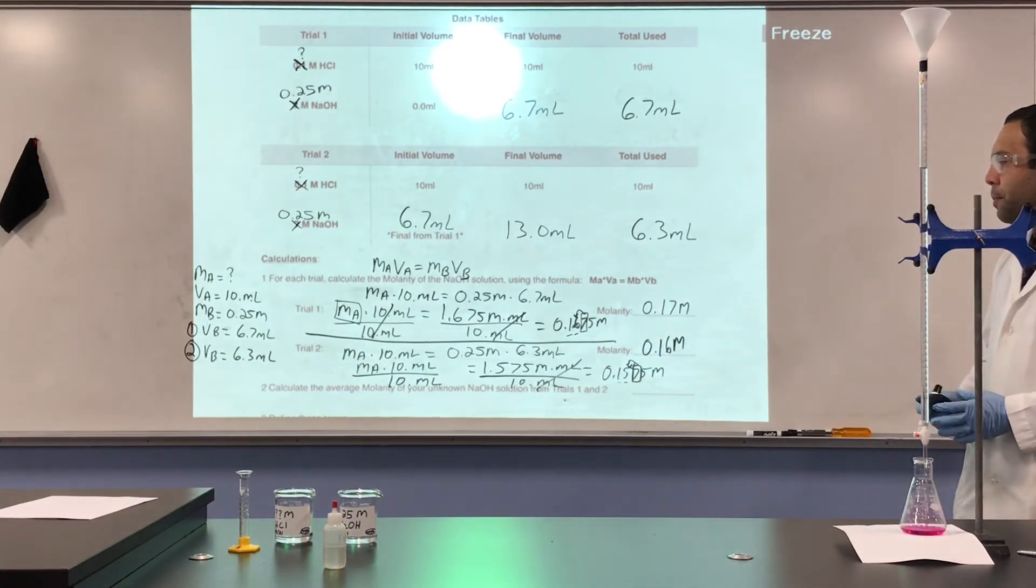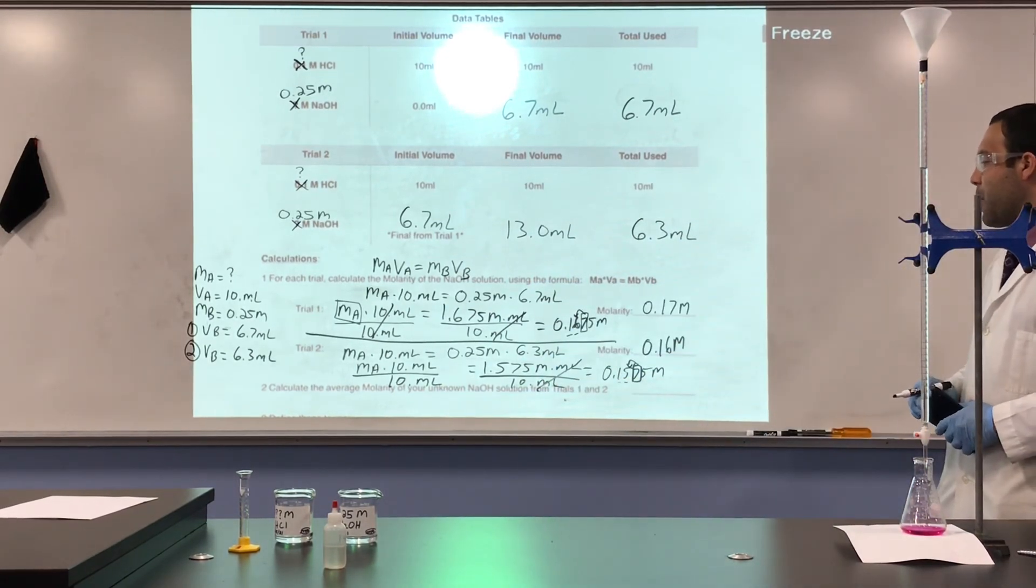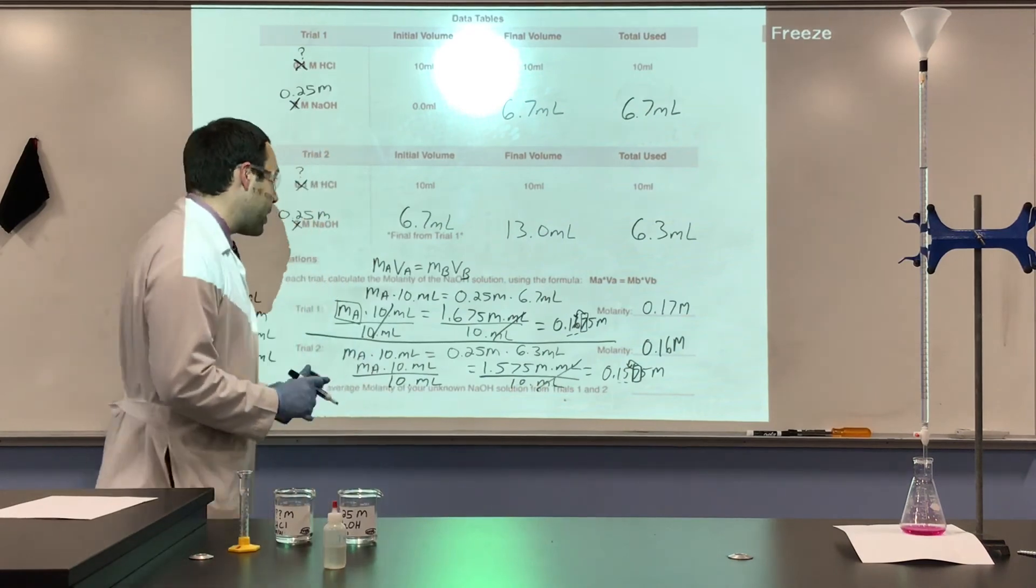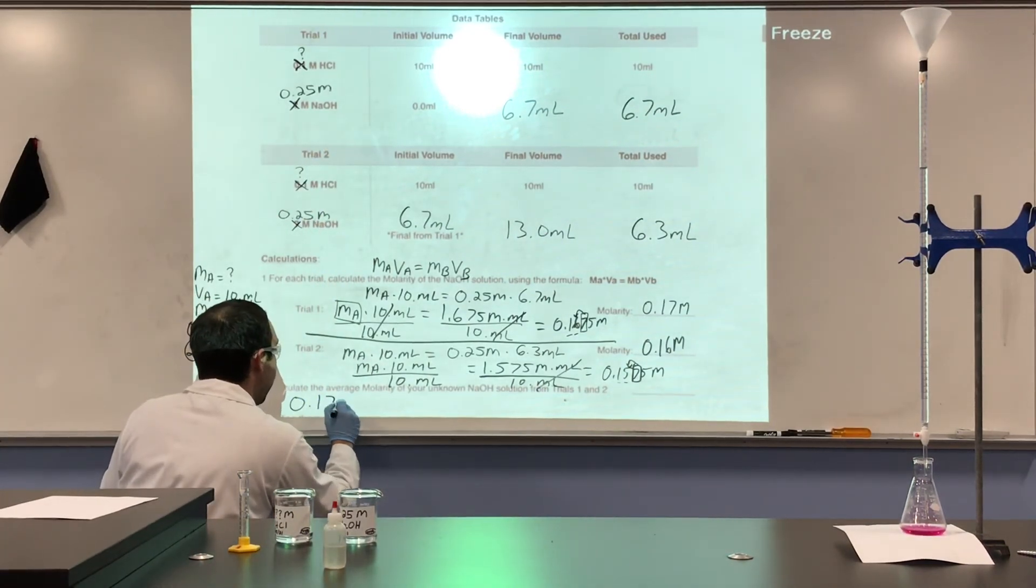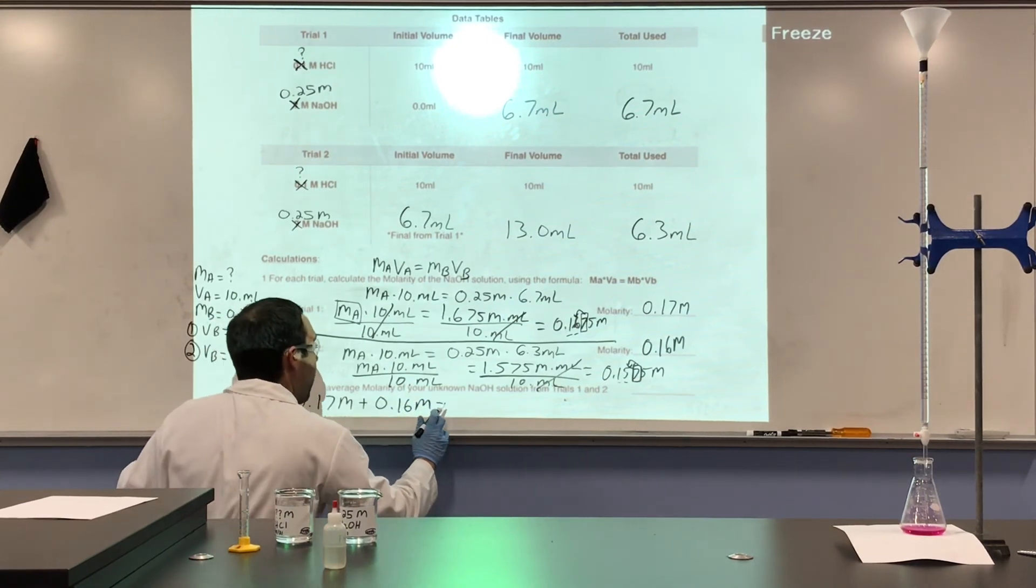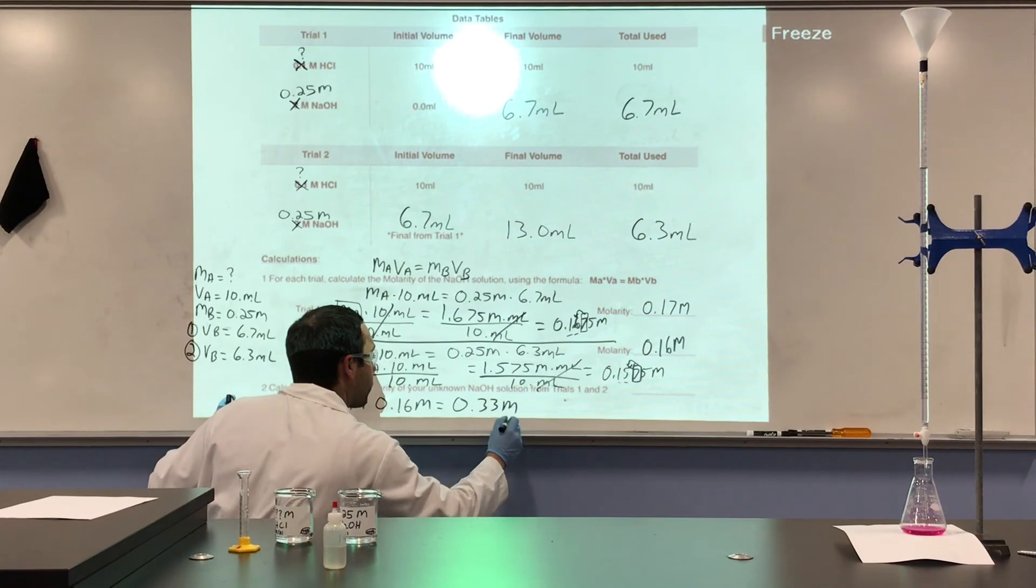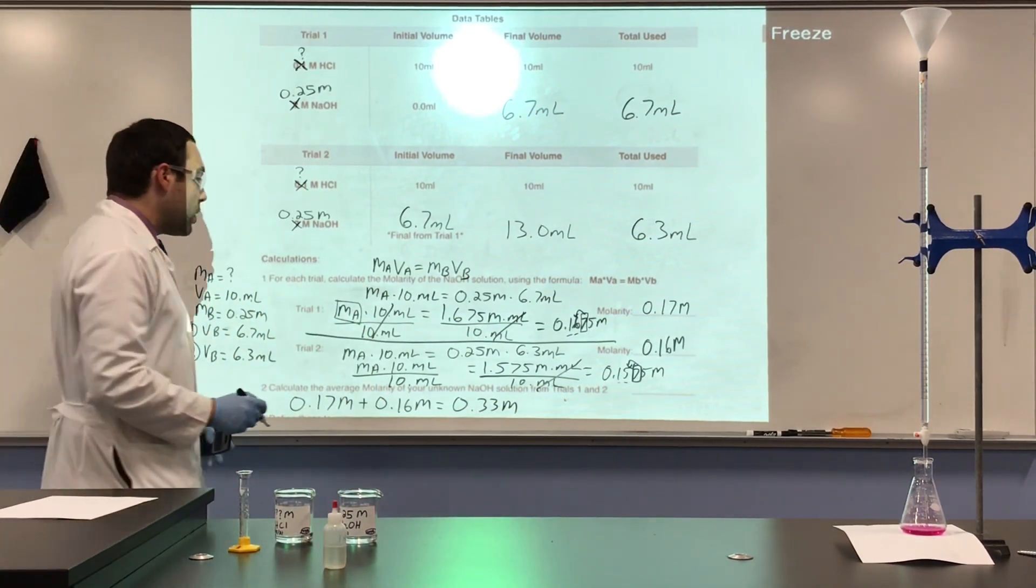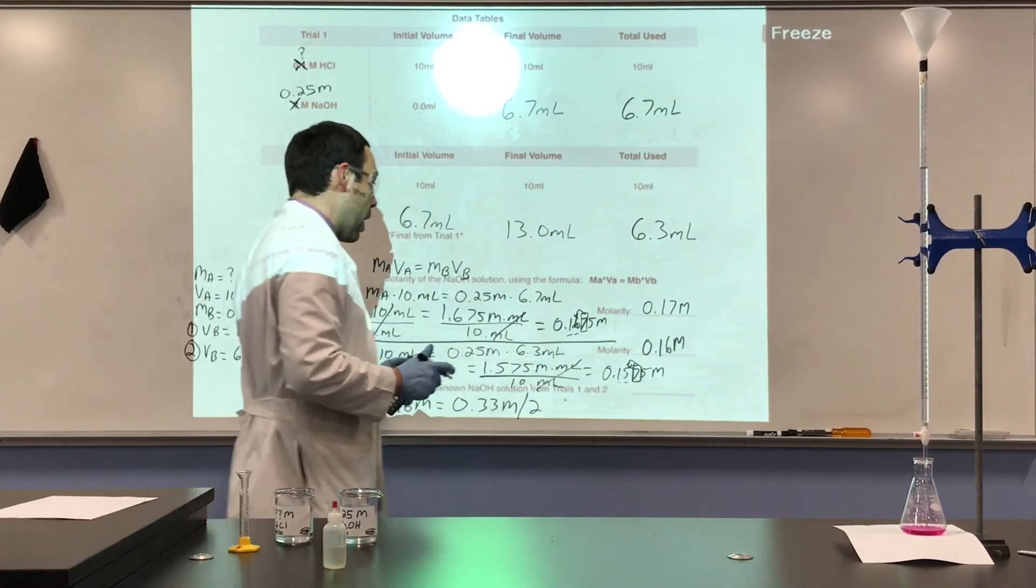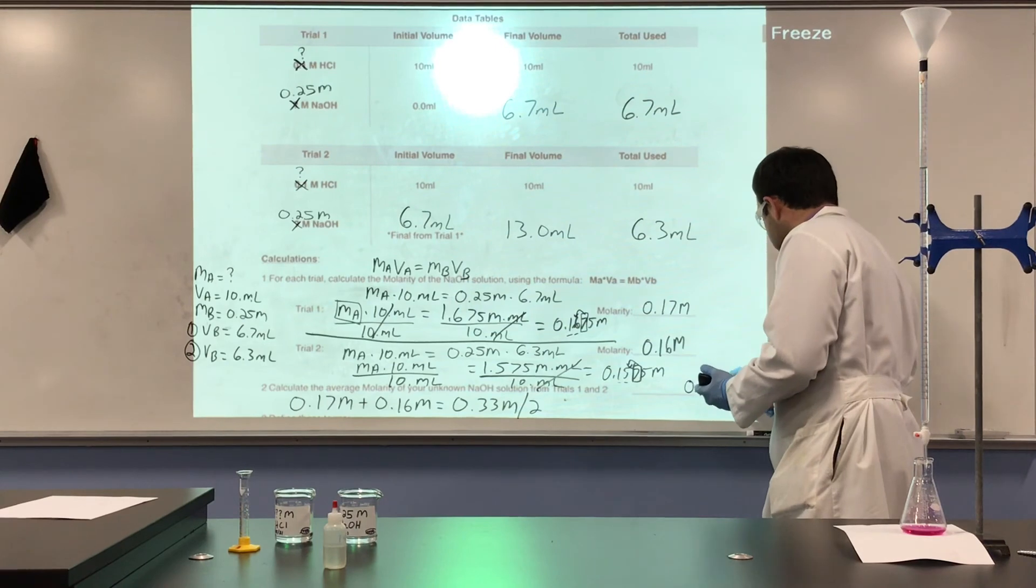So, for question 2, it asks us to calculate the average molarity of your unknown NaOH solution from trials 1 and 2. So we do the average. We take the two molarities, we add them together, so 0.17 M plus 0.16 M, we add those two together, we get 0.33 M. And since it's two trials, we'll divide that by 2, and we'll get 0.165 molar.